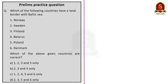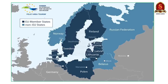Moving on to the third question — this is a map-based question. Six countries are given and we have to find which countries have borders with the Baltic Sea. The countries bordering the Baltic Sea include Sweden, Finland, Russia, Estonia, Latvia, Lithuania, Poland, Germany and Denmark.